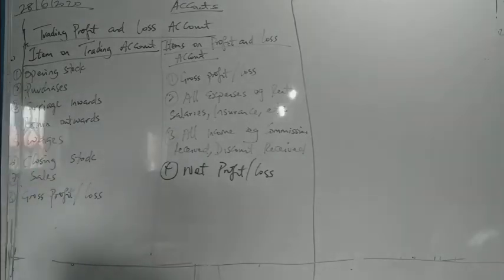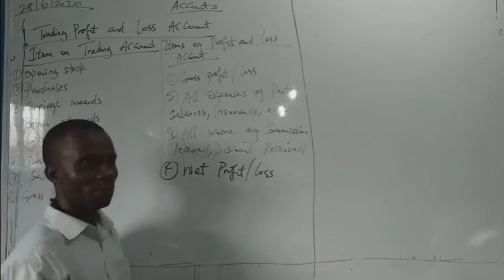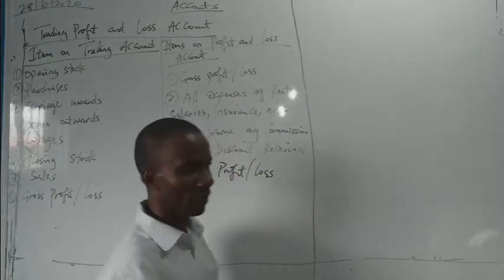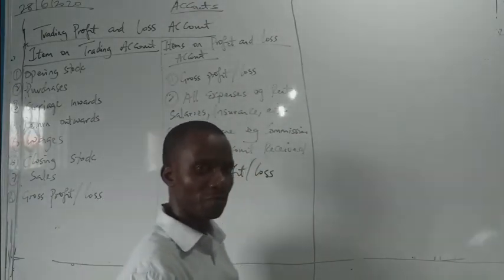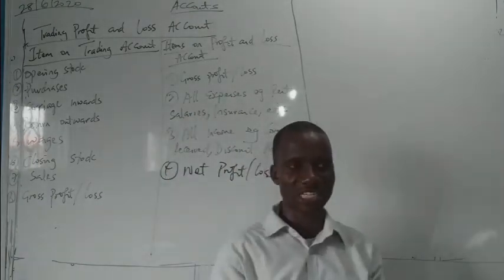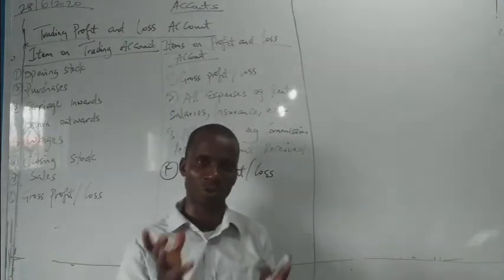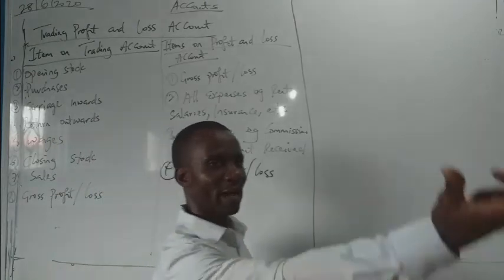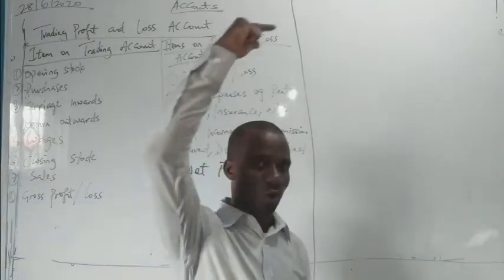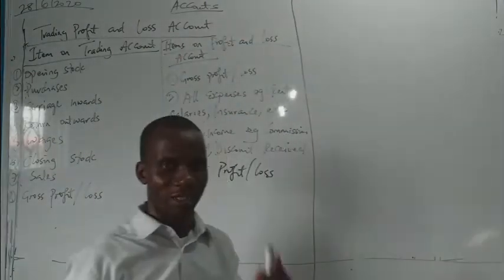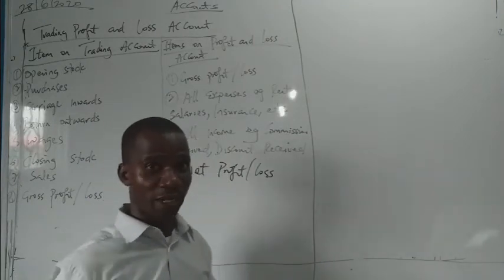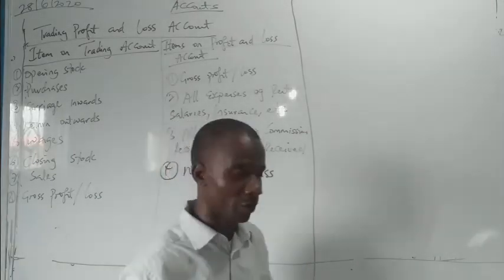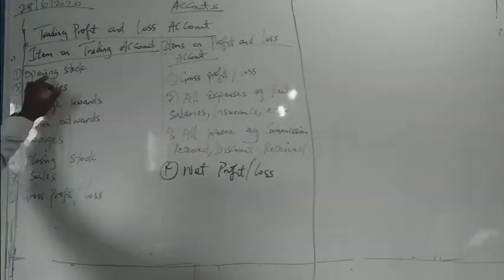The first item is opening stock. What do they mean by opening stock? It is the stock at the beginning of a month or an accounting period. Businesses usually have stock in their warehouse — those are goods that were not sold in the previous accounting period and were brought forward to the new accounting period. That is why they are called opening stock.